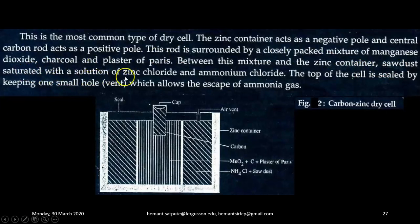Between this mixture and the zinc container, sawdust saturated with a solution of zinc chloride and ammonium chloride is placed. Next, the top of the cell is sealed by keeping one small hole vent which allows the escape of ammonia gas. So this is small air vent.